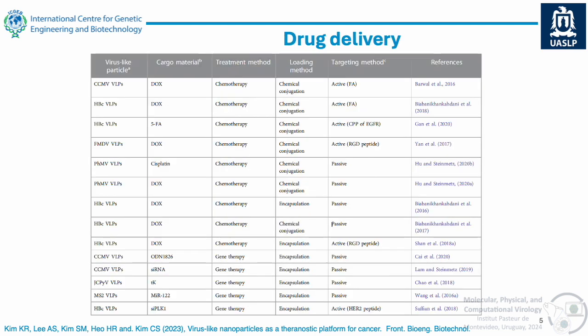For drug delivery, we have a wide range of options. Cowpea chlorotic mottle virus is one of my favorites because we know how to assemble it, but you can use hepatitis B, other plant viruses, even foot-and-mouth disease virus, MS2 — and then you can add, for example, cisplatin or doxorubicin, which is used for chemotherapy, or silencing microRNAs. In some cases you can do active targeting or passive targeting. It all depends on how you do it — for example, if you want to add doxorubicin, you need chemical conjugation, but in other cases you can encapsulate it without chemical conjugation.